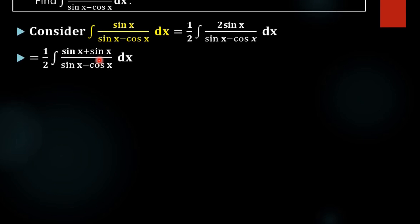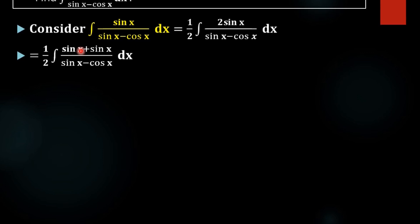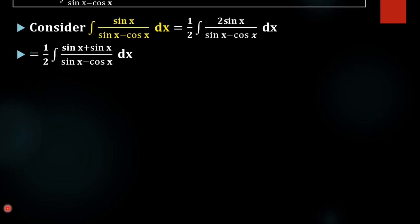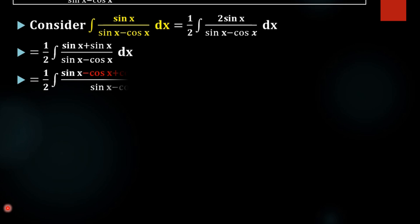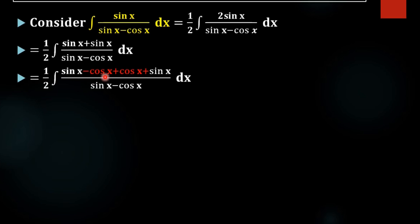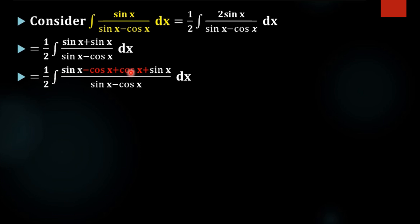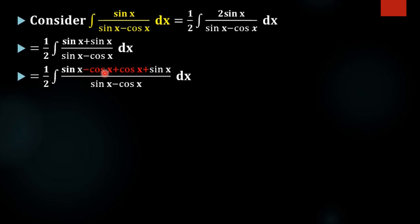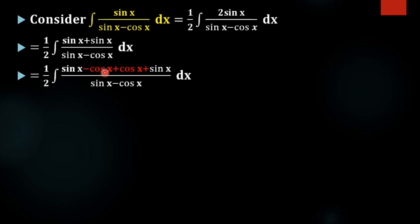In order to get a cos x term, we are adding a cos x and subtracting a cos x here. We are adding a cos x and subtracting a cos x to our numerator. Now this becomes 0, that cos x minus cos x is 0, which makes no changes to the function. In the next step, we are separating our numerator.